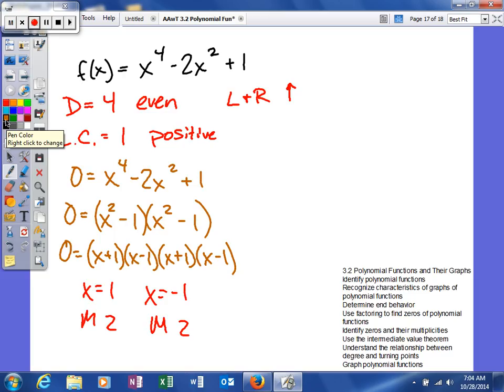Next, what we're going to do is figure out what our y-intercept is. So we'll plug in f of zero, which will give us zero minus zero plus one. So f of zero will give us one.